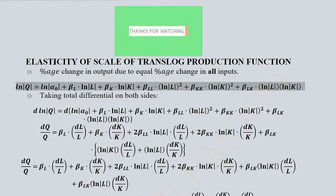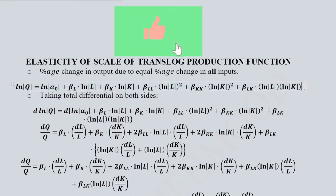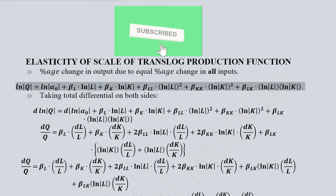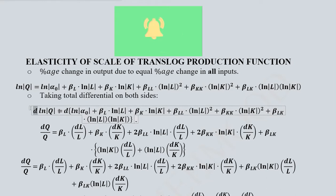Now we remind ourselves with the basic form of the Translog production function in its two input case, that is labor and capital. Now we take the total differential of this Translog production function. You can see total differential is taken so we have the differential sign on both sides of the equation.